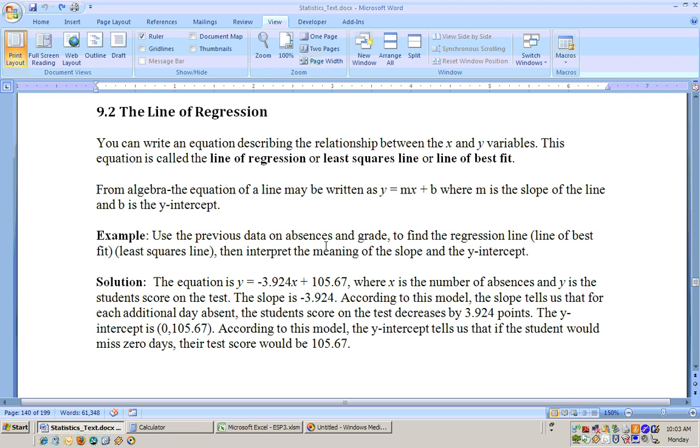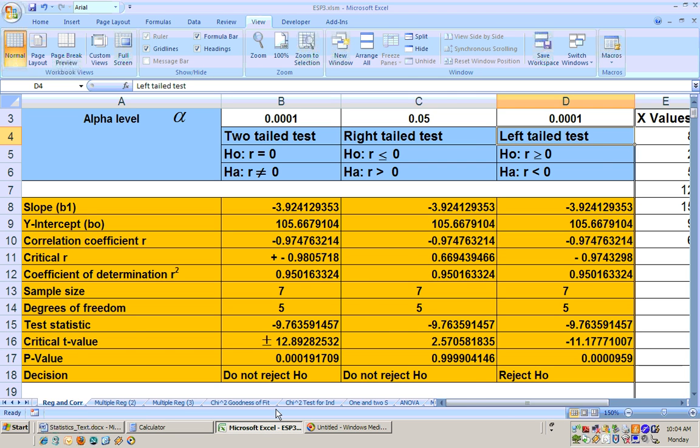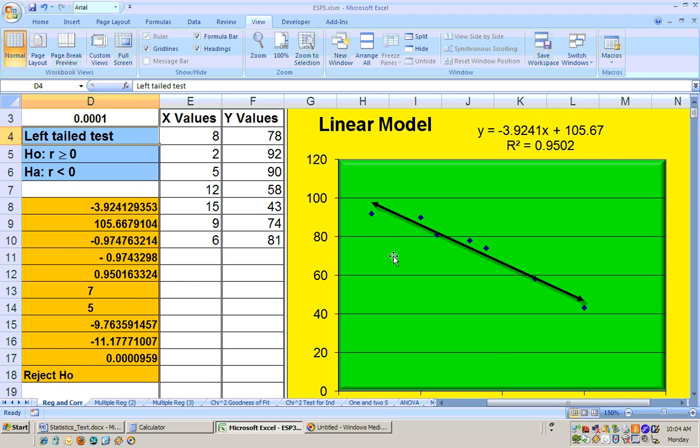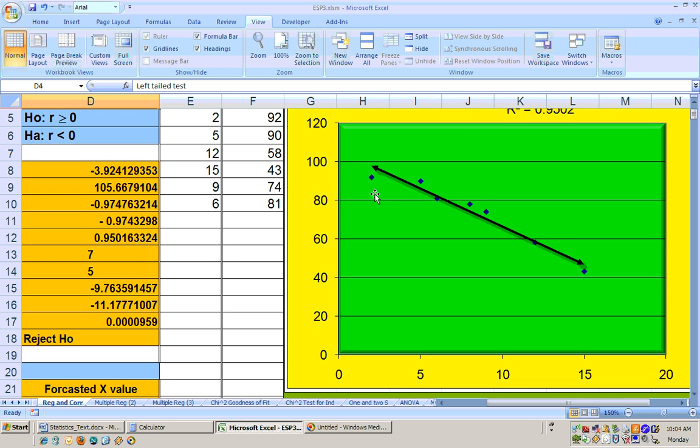So for the previous problem that we did with absences and grade, we found the line of best fit. So let's go to the Excel sheet, and we'll see that line. Again, here's the data still in there for number of absences here, and here is the grades. And what we found was here's the data points. The blue dots are the data points for each person. Like here's this person that missed, didn't miss too many classes, only missed two classes, and got a score of 92. That's this person right here.